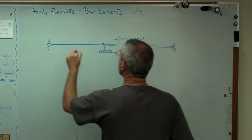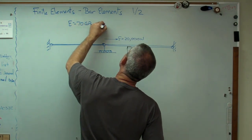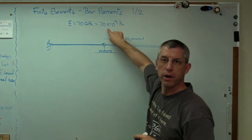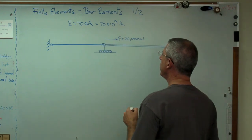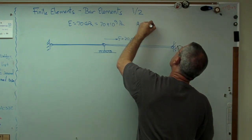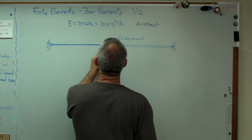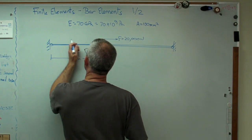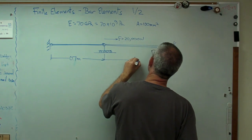Let's put some more numbers on this. E for both of them is 70 gigapascals, which is 70 times 10 to the ninth pascals, newton per meter squared. You might recognize that's the elastic modulus of aluminum - I'm going to assume those two bars are made of aluminum. I need a cross-sectional area, so let's say A is 100 millimeters squared. That's a decent size. I need some length - that length is 0.7 meters there and one meter there.